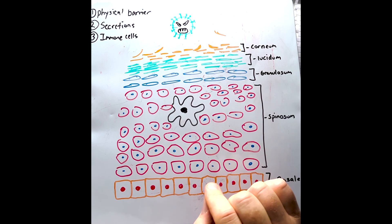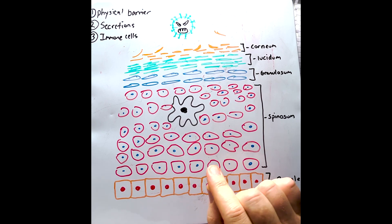Our skin is one of the non-specific barriers of the immune system. This is known as the innate immune system.